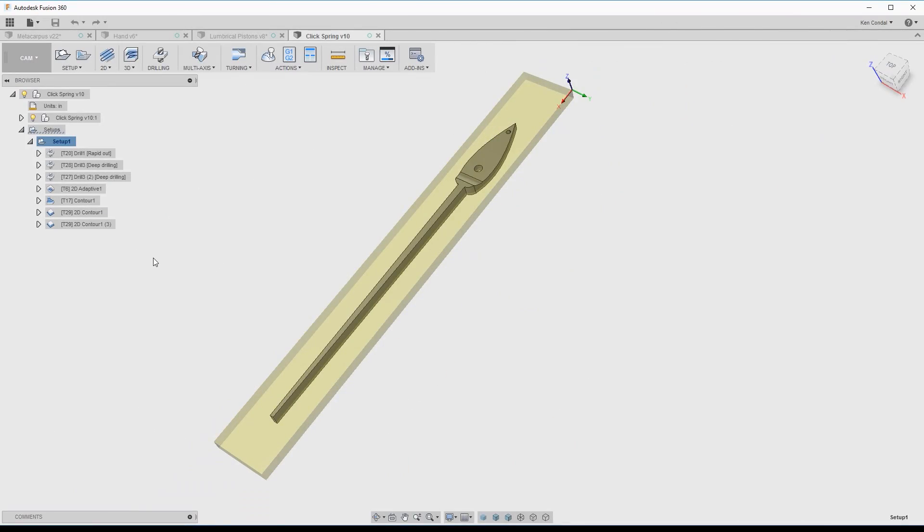Since the mill was up and running, I decided to cut out some of the steel parts using CNC. In this case, we're looking at the click spring.